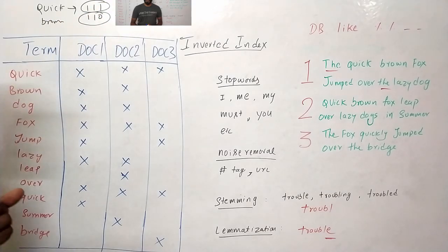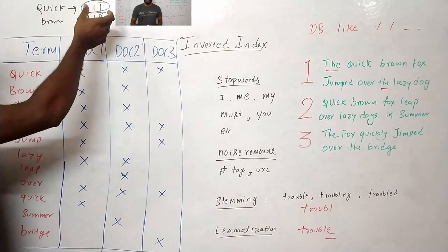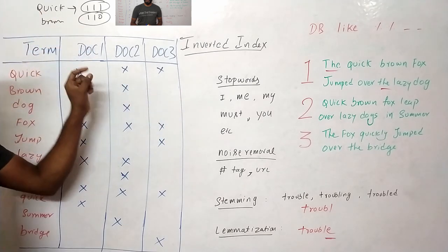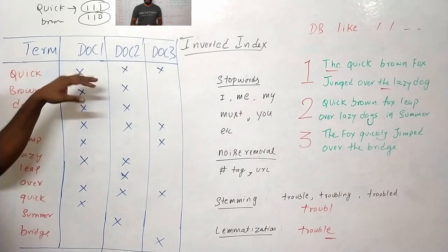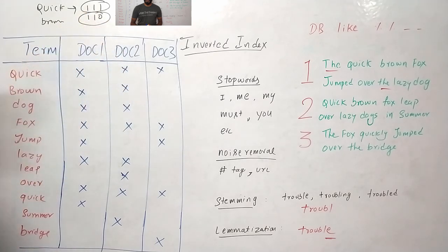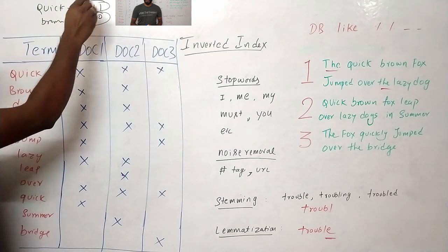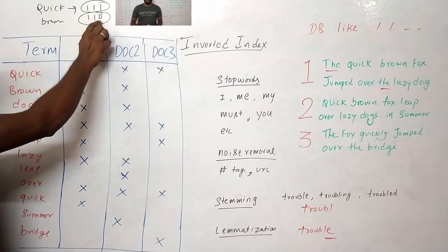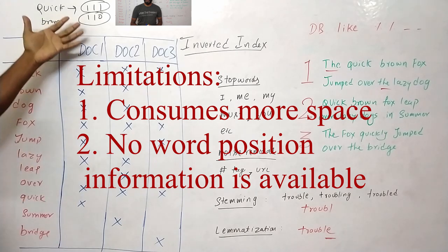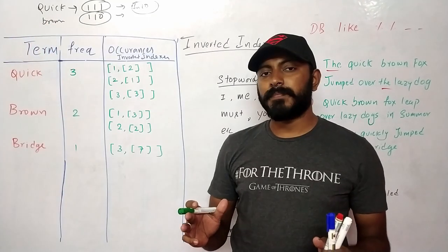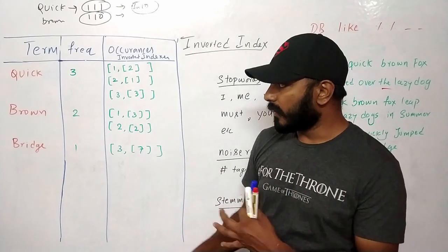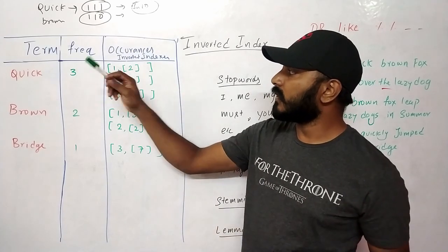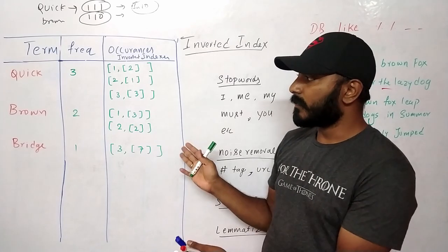This has limitations, so there are different representations of indexing. A better representation also captures frequency and occurrence positions — this is the inverted index. Using one simple number we're able to store a lot of information: which document a word exists in, in bitwise format. From left to right, each bit tells you which document has it.